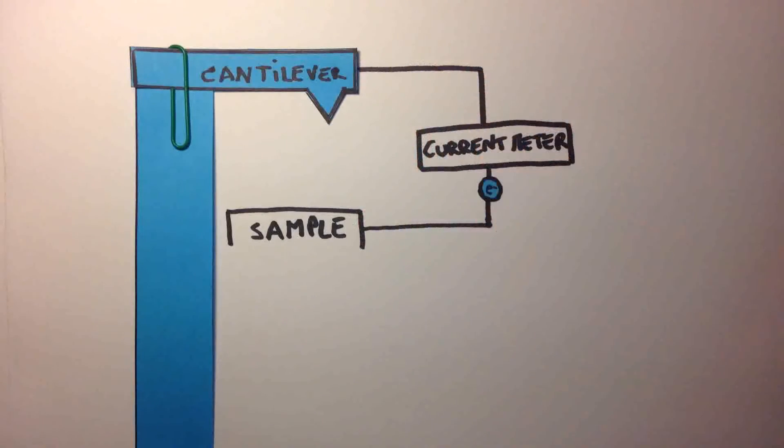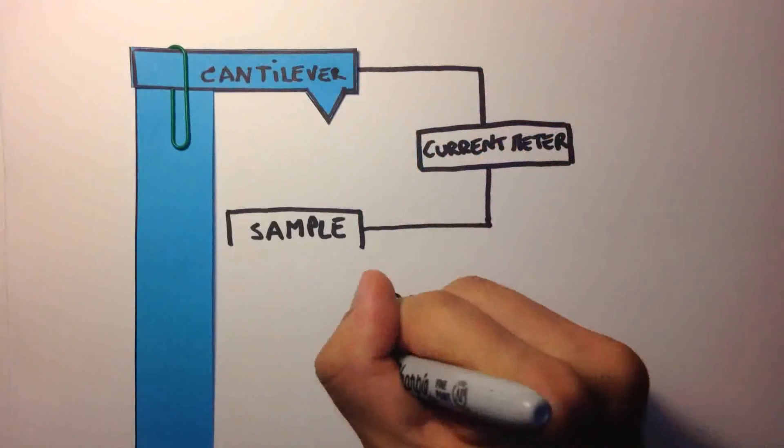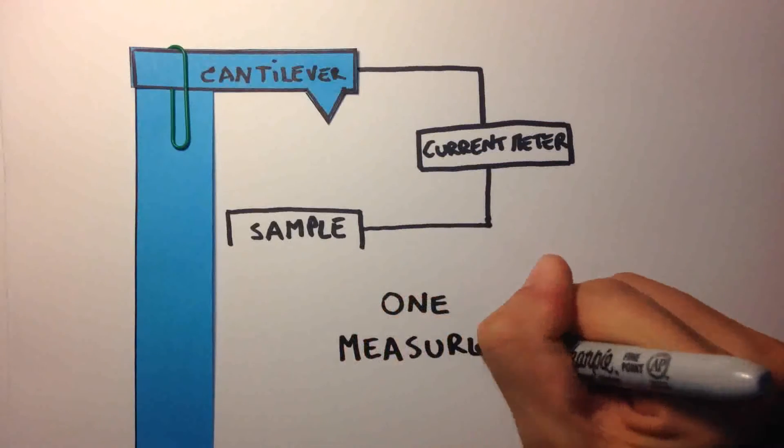This produces a one-shot measurement, because the surface becomes charged and the charges must dissipate before another measurement can be made.